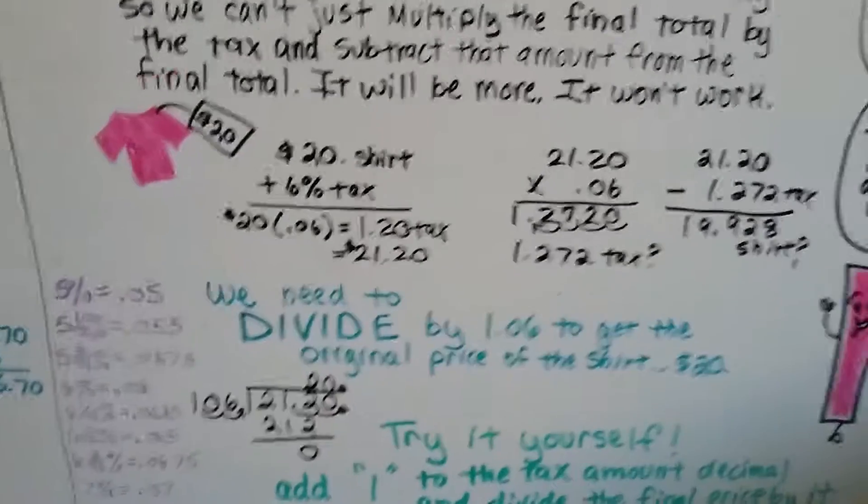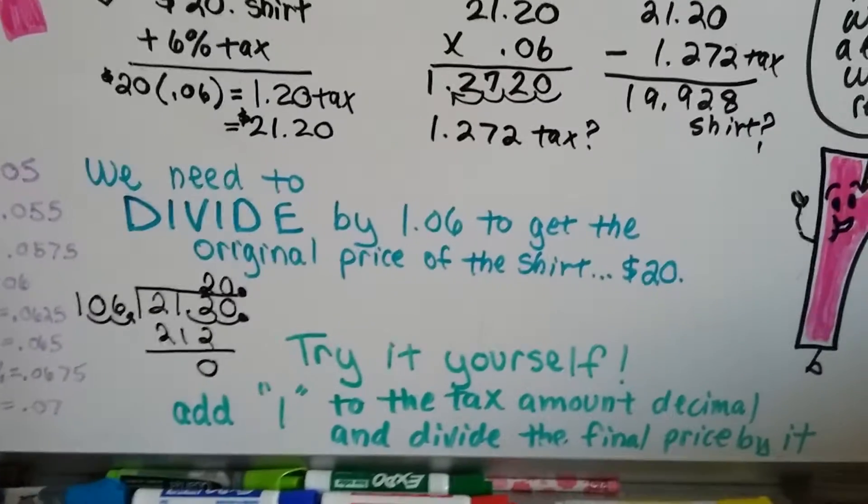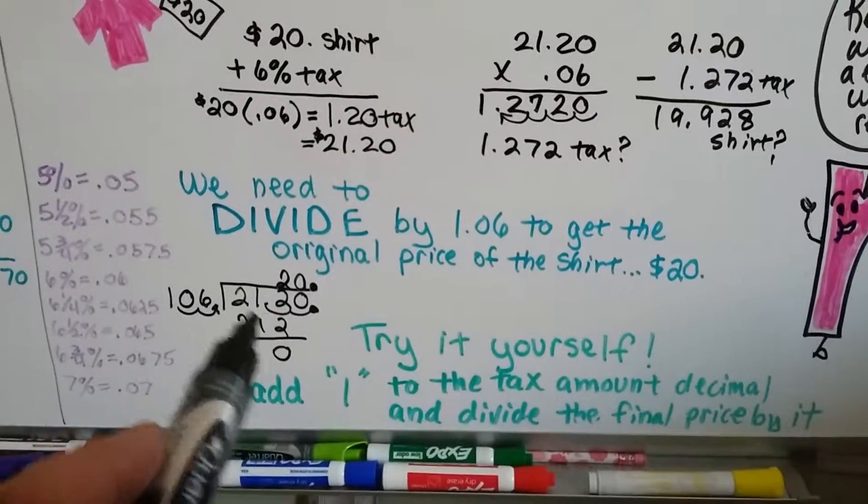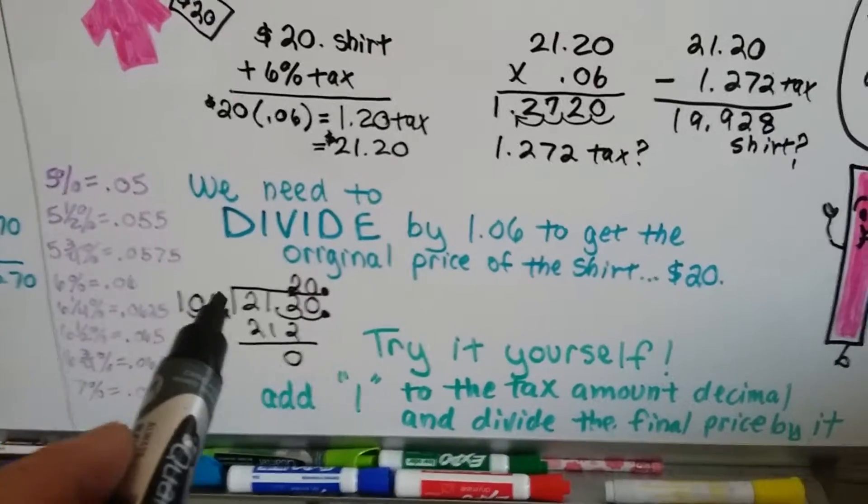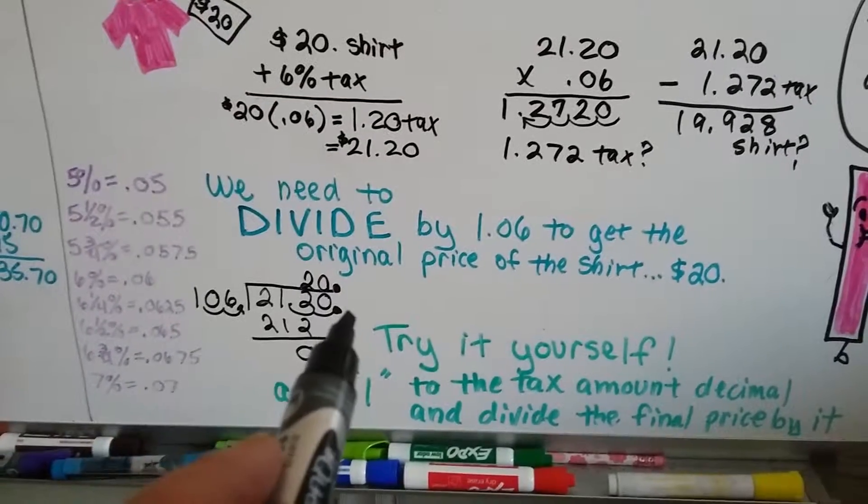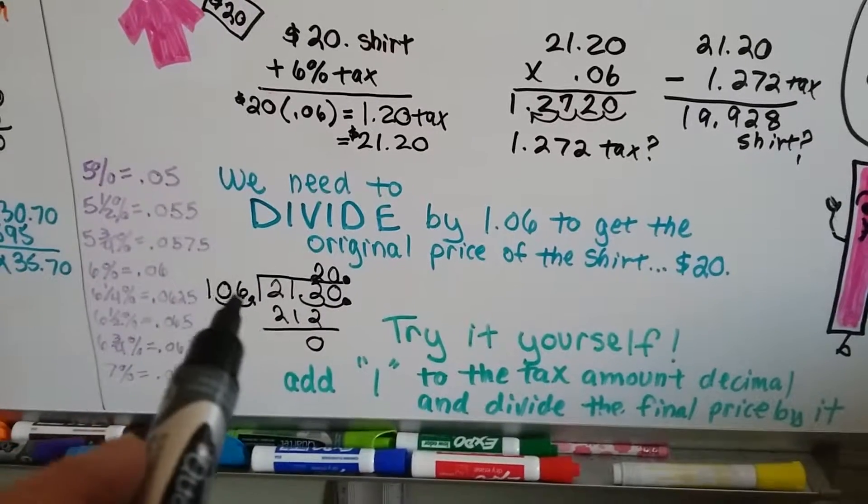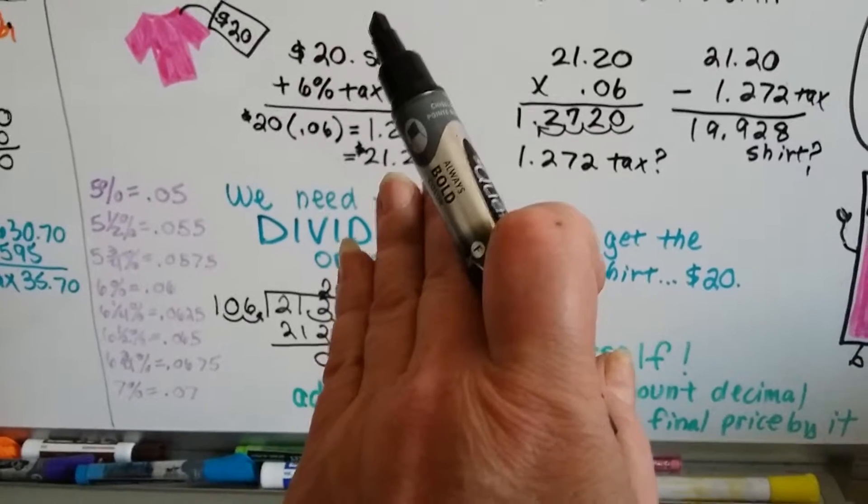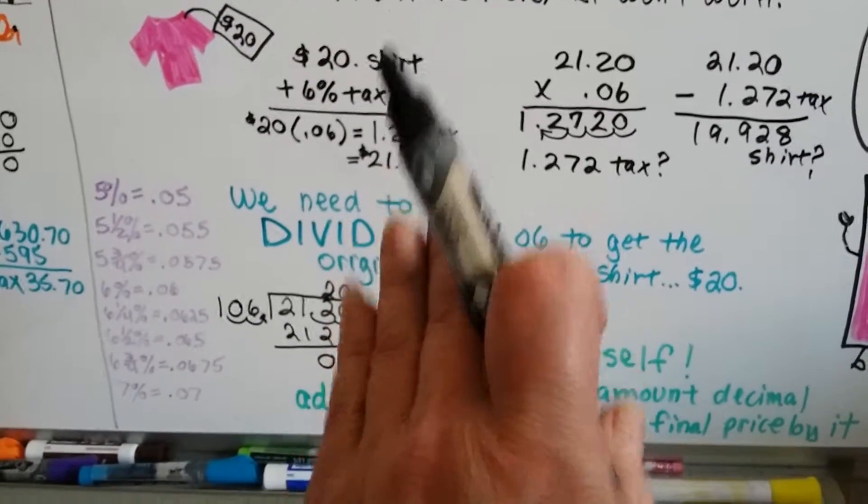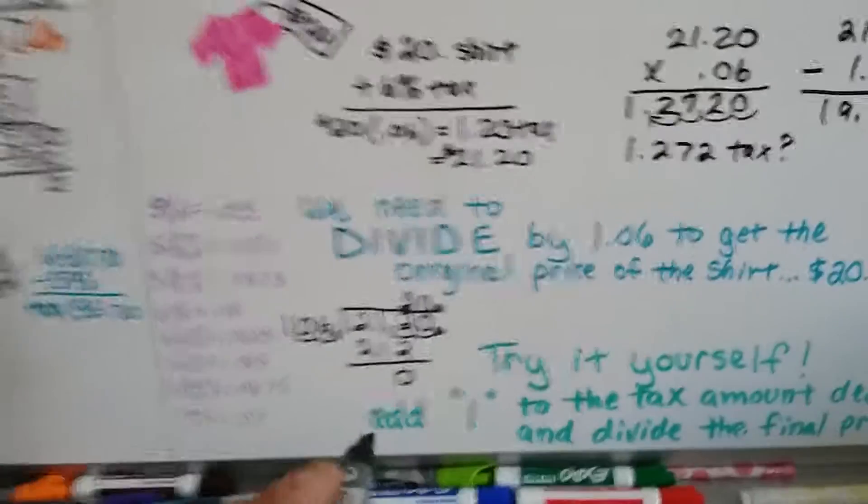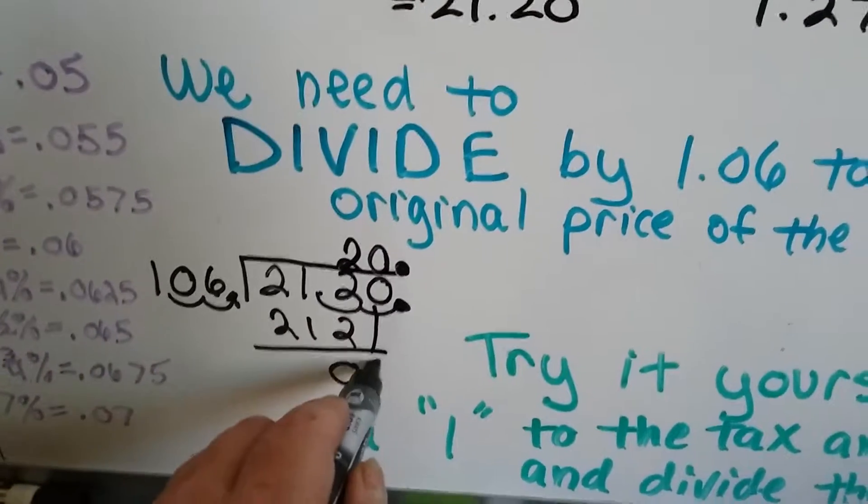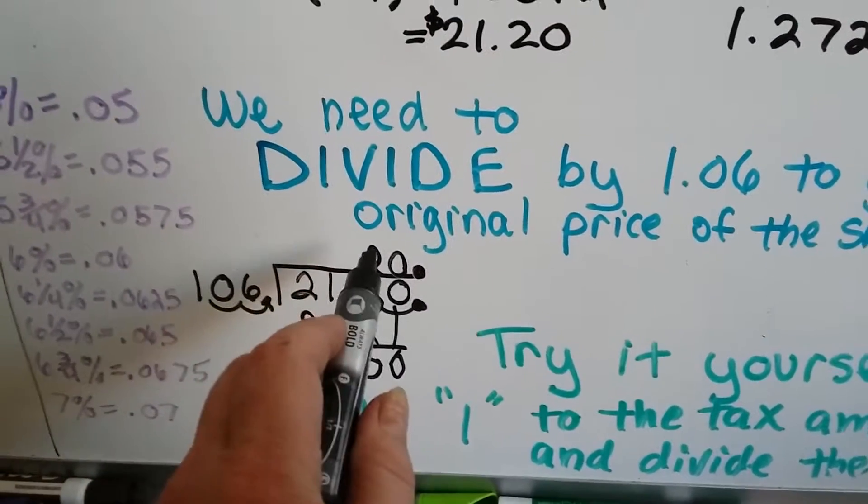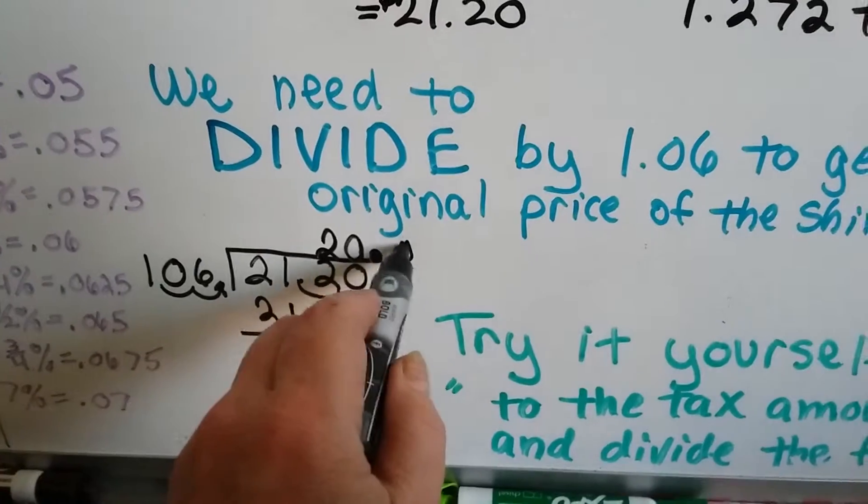So what we do is we need to divide by 1.06 to get the original price of the shirt $20. If we have 2120 and we divide by the 106, again we move the decimal places over. And we put the 106 into 212 because it fits into 212 two times. 106 plus 106 is 212. So we got a zero. And then we had to drop the other zero down but it's still zero. And it goes into it zero times, so that gave us two zero point. So we know that's like $20.